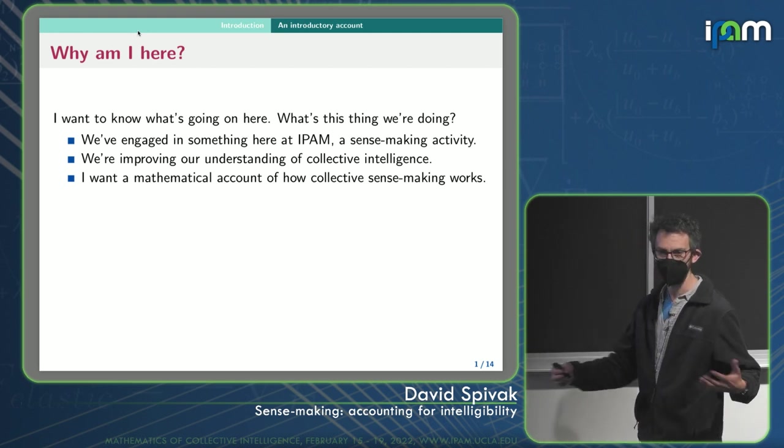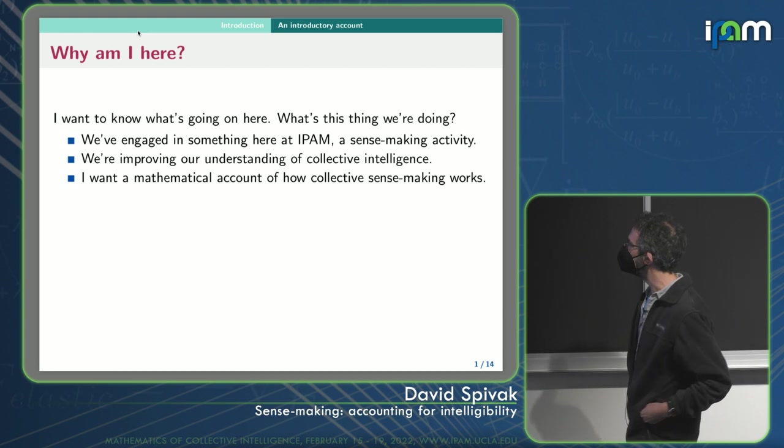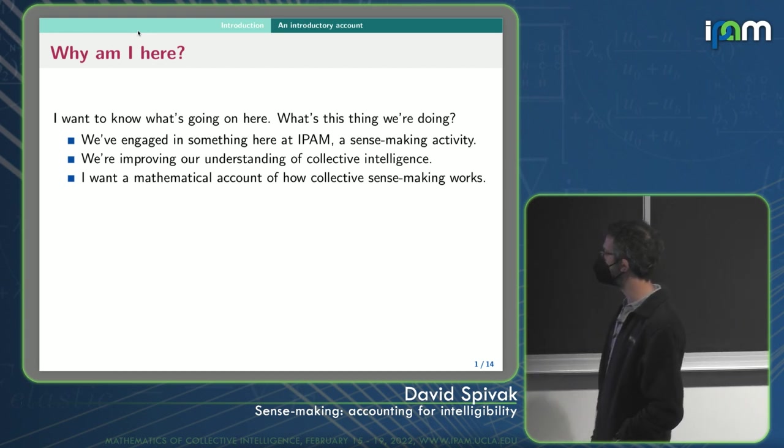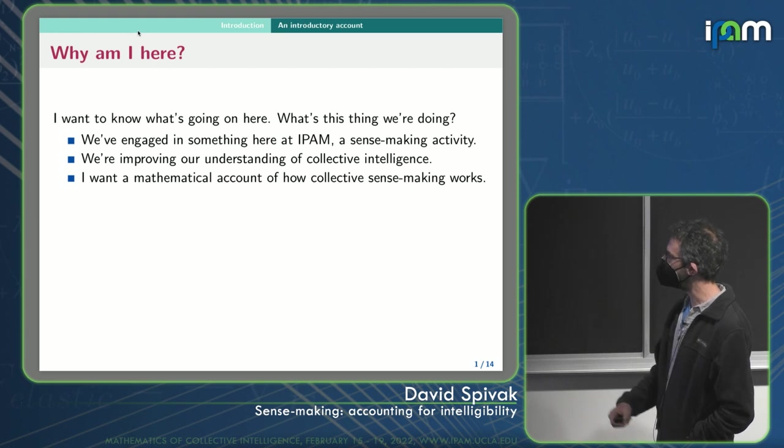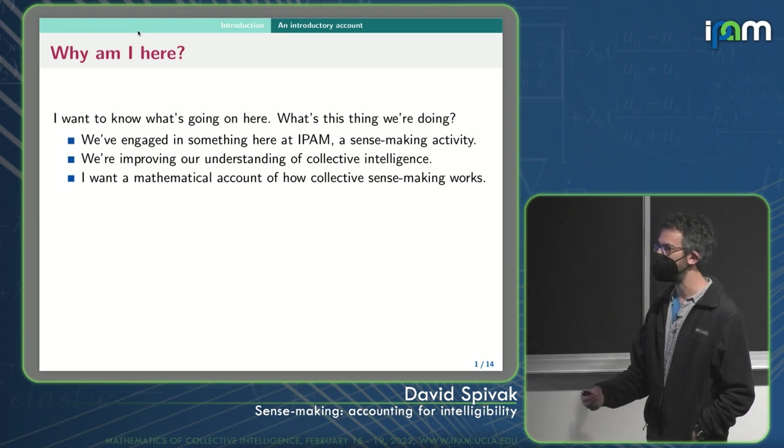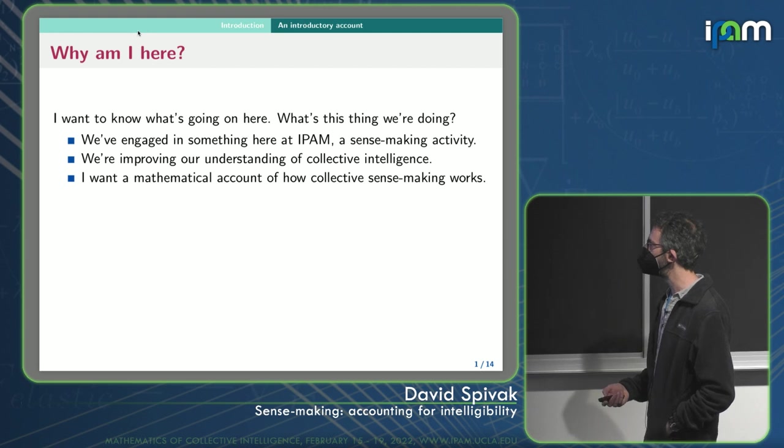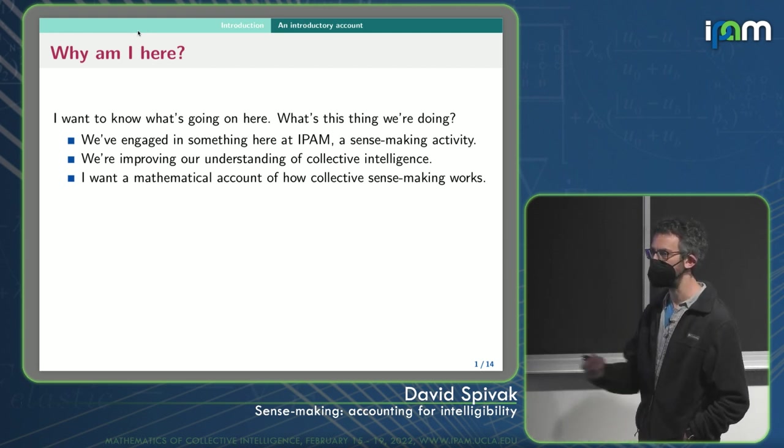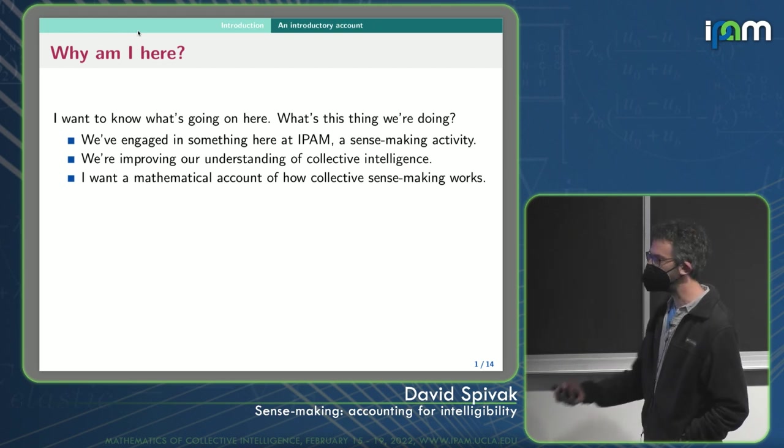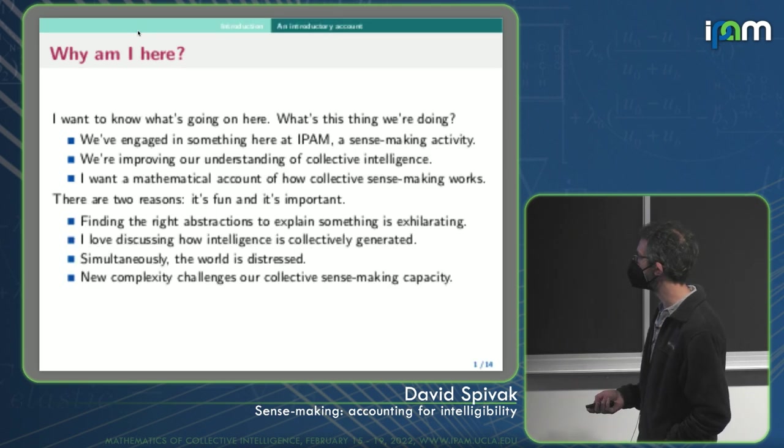And so to do it, what we're doing is we're trying to improve our understanding of collective intelligence. And I want to collect a mathematical account of how this collective sense-making works. What would you say about this to understand what it is we're doing and how it's helping us? What is it doing to your brain or to the way we interact or to the way we connect?